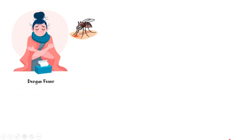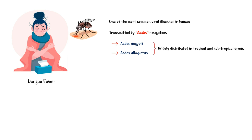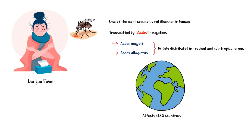Dengue fever is one of the most common viral illnesses in humans. It is transmitted by mosquitoes of the genus Aedes — more specifically, Aedes aegypti and Aedes albopictus — which are widely distributed in tropical and subtropical areas. Dengue affects more than 120 countries around the world, and it has been named as one of the top 10 threats to world health by the WHO.